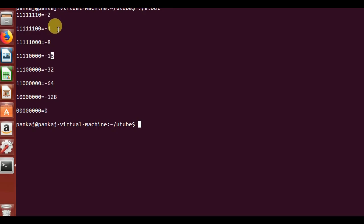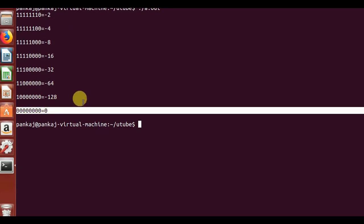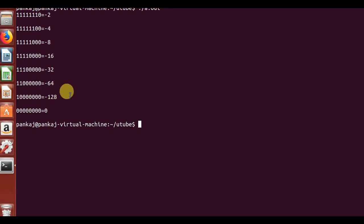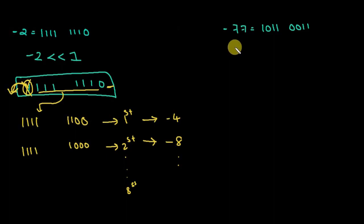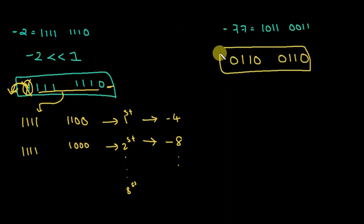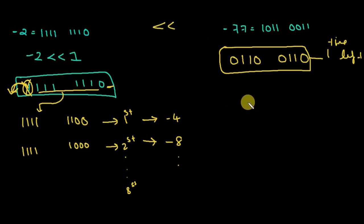You might think that left-shifting a negative number is just multiplication by 2, but then you see the answer becomes 0. So there is no fixed rule that this multiplication pattern will always hold. Now let's look at minus 77 — if I left-shift it one time, here is the answer.